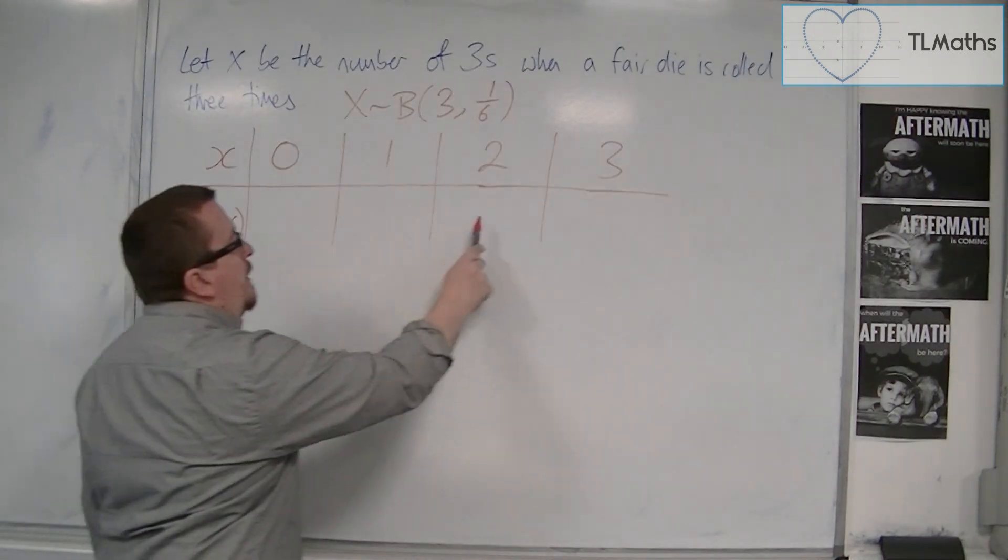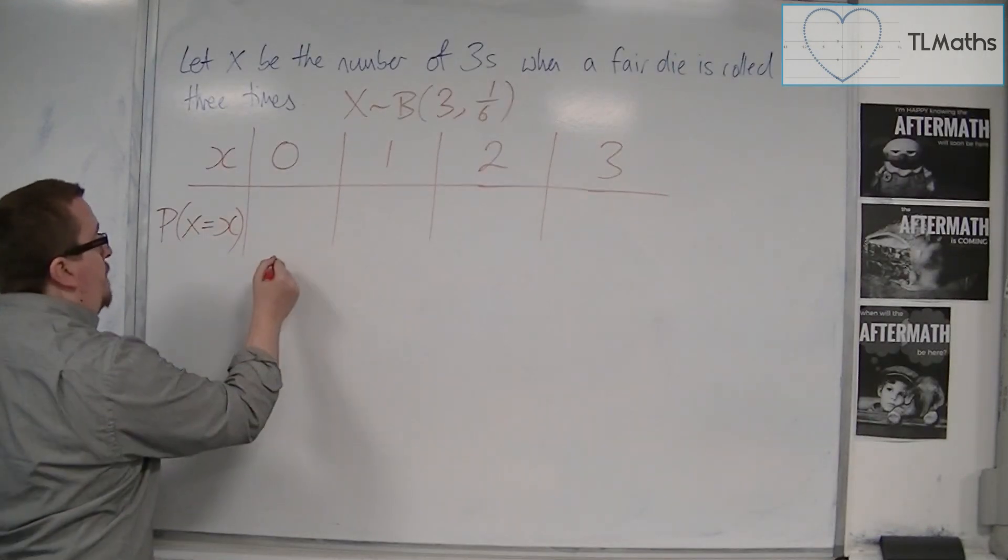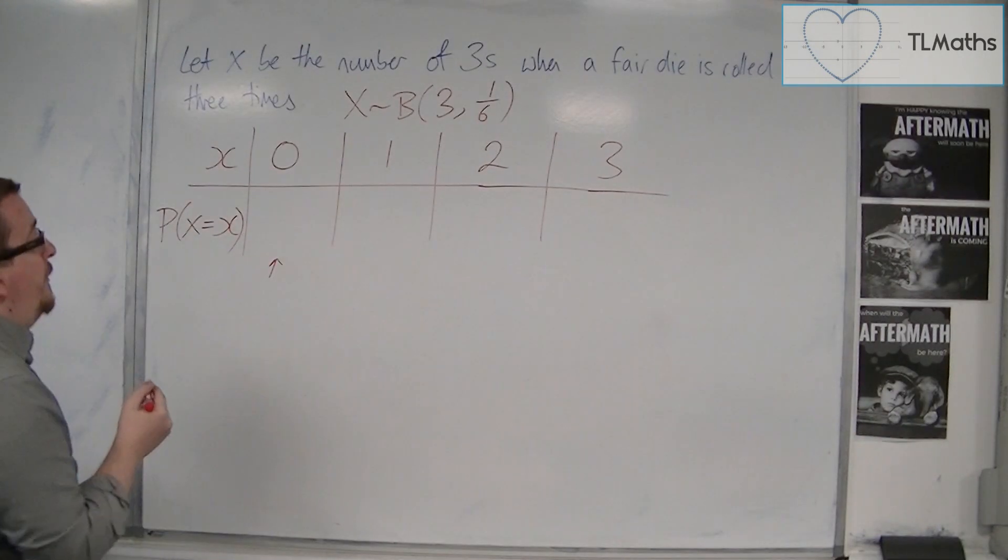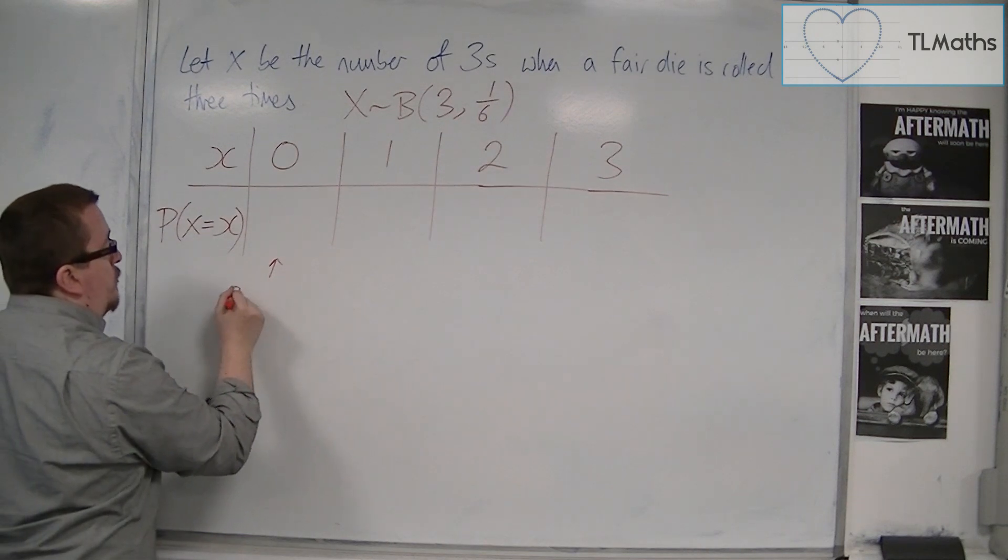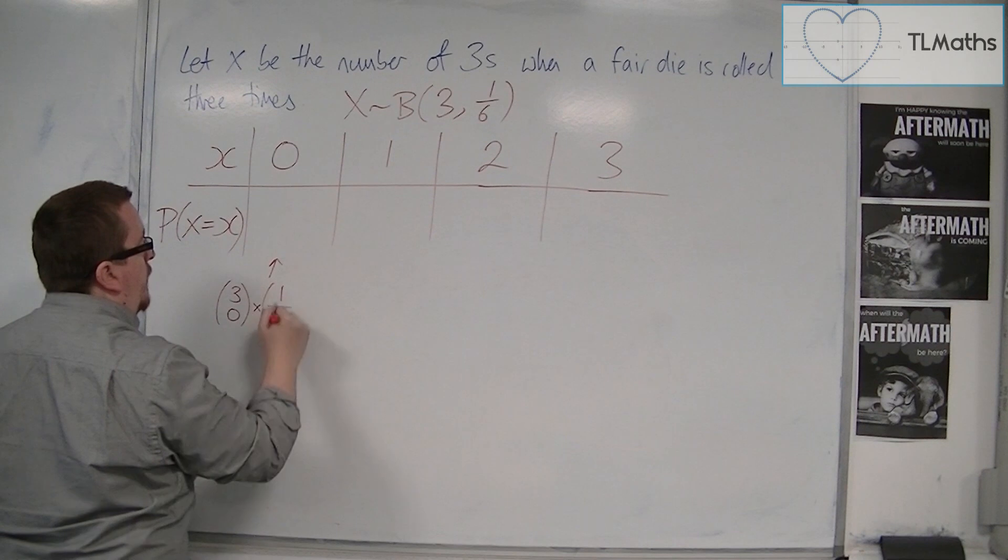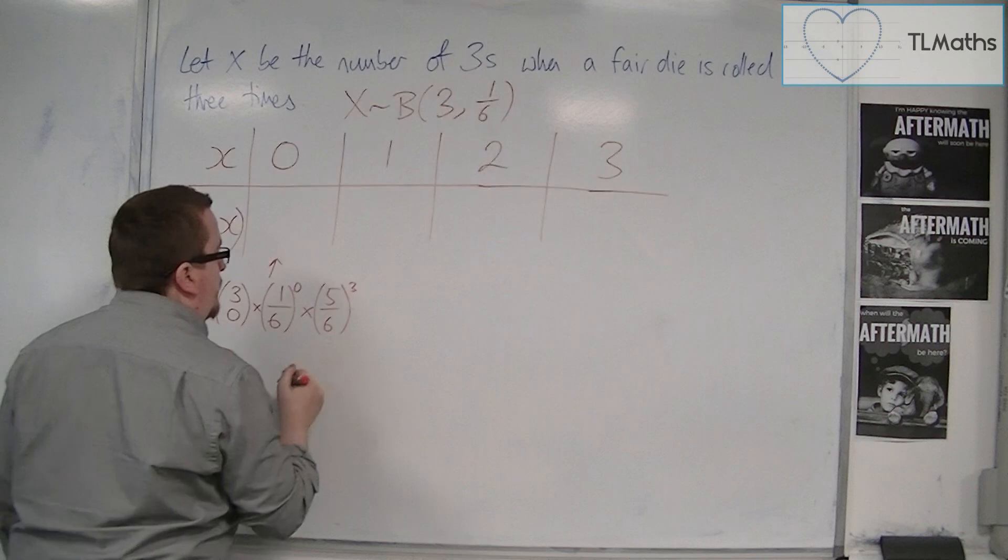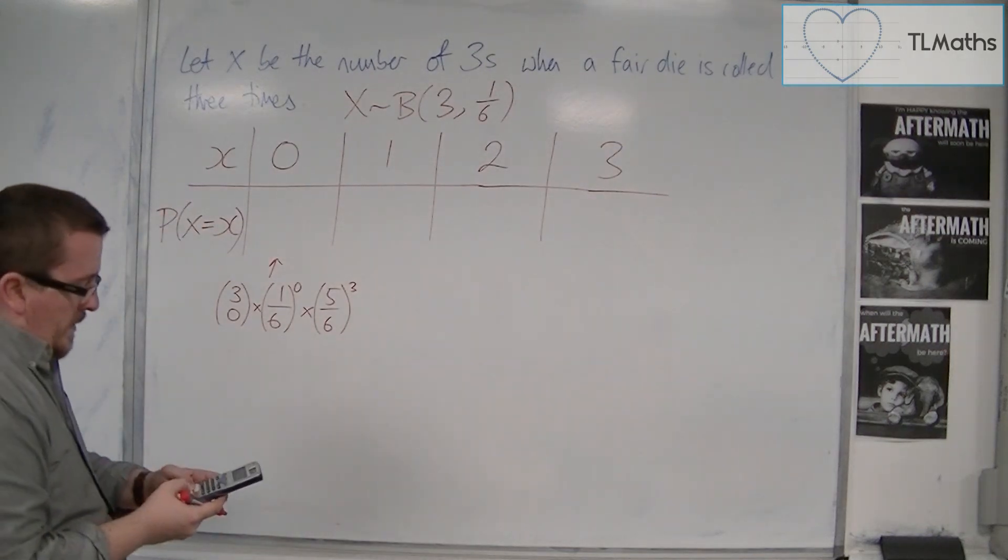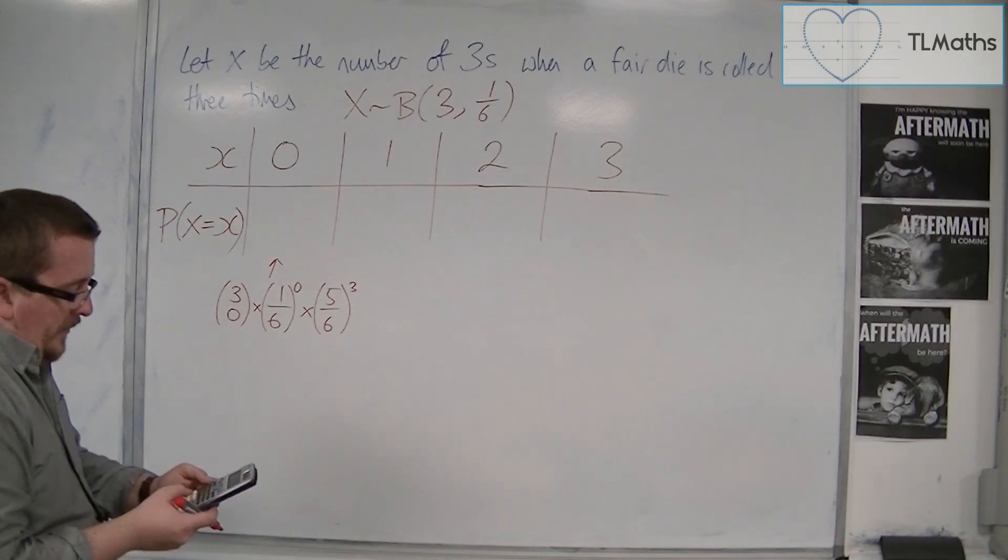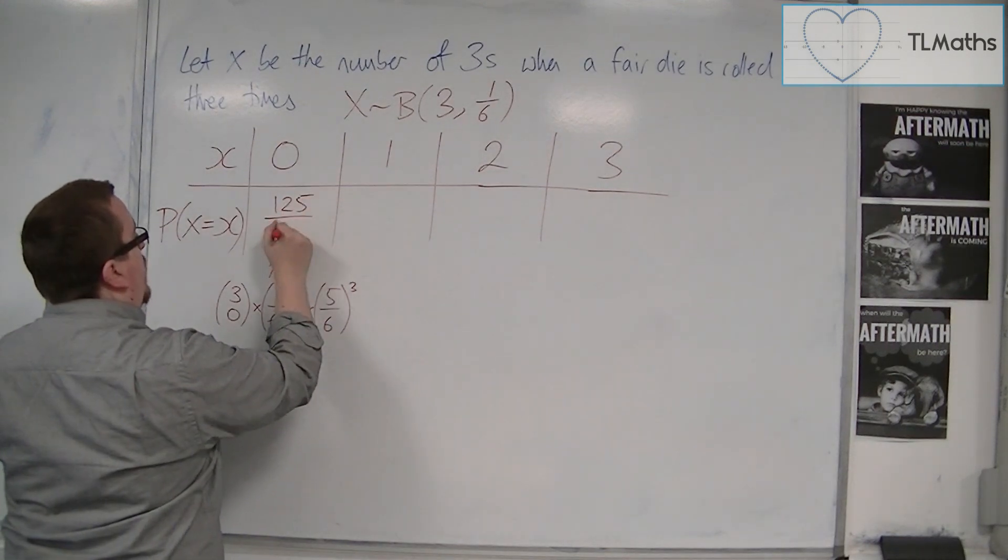And I could work out each of these probabilities. So this one is the same as 3 choose 0 times 1 sixth to the 0 times 5 sixths to the 3. So effectively just 5 sixths to the 3. So that's 125 over 216.